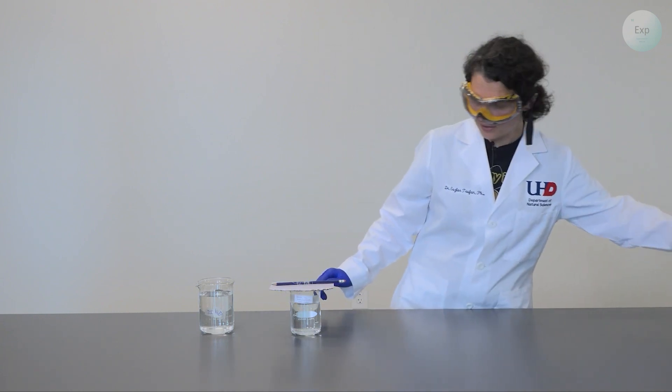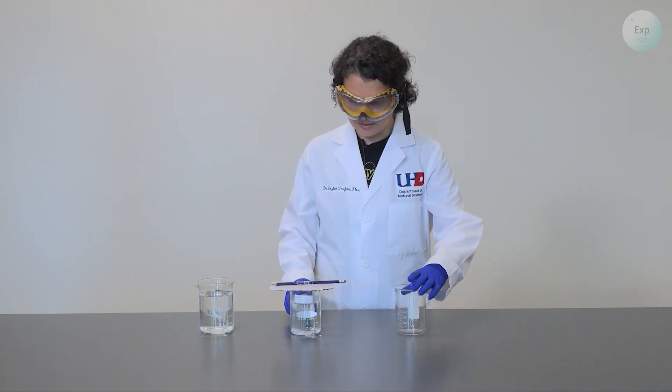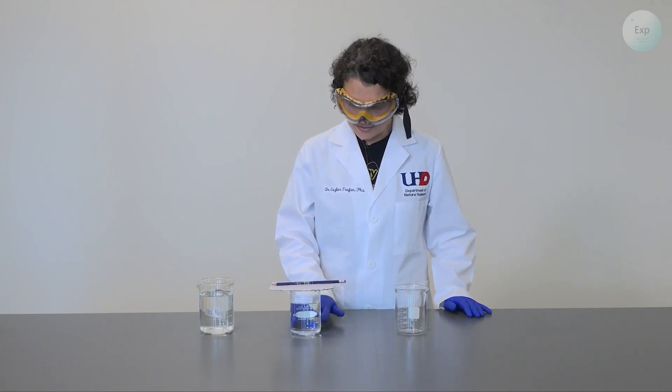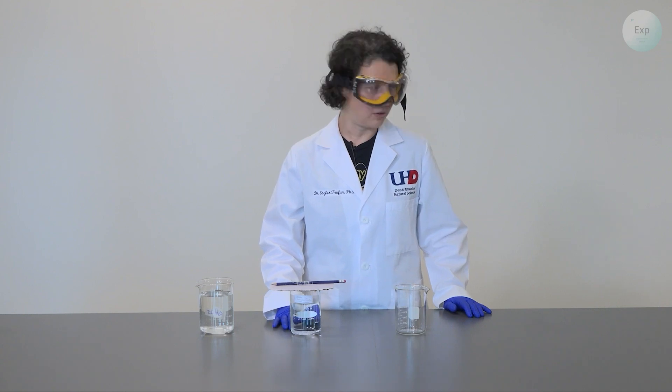Next, we're going to need another beaker in which we're going to decant our saturated alum solution because we need to remove all the little crystals that are involved.